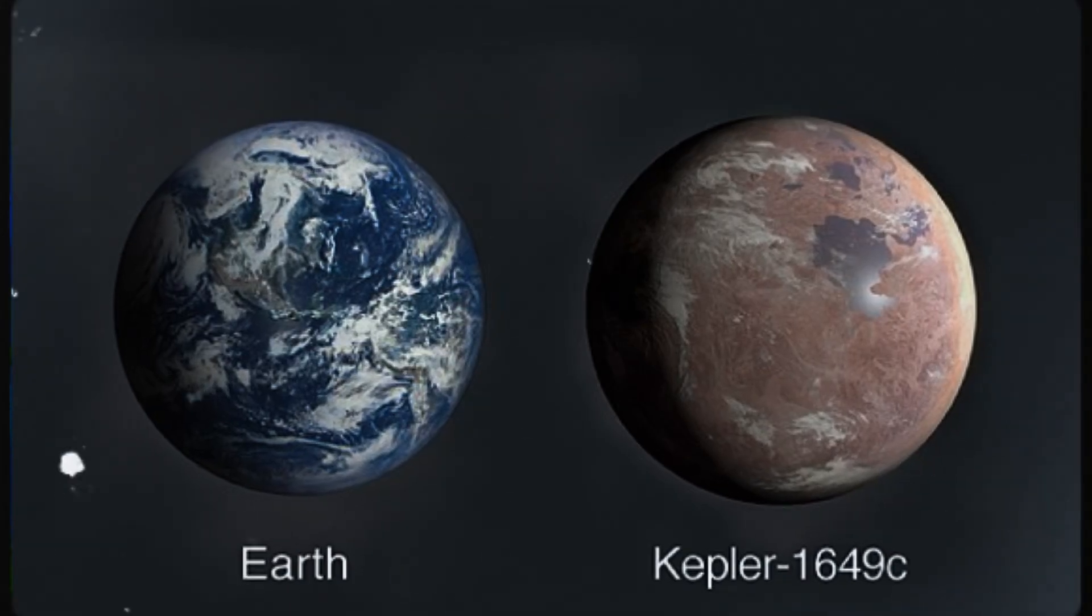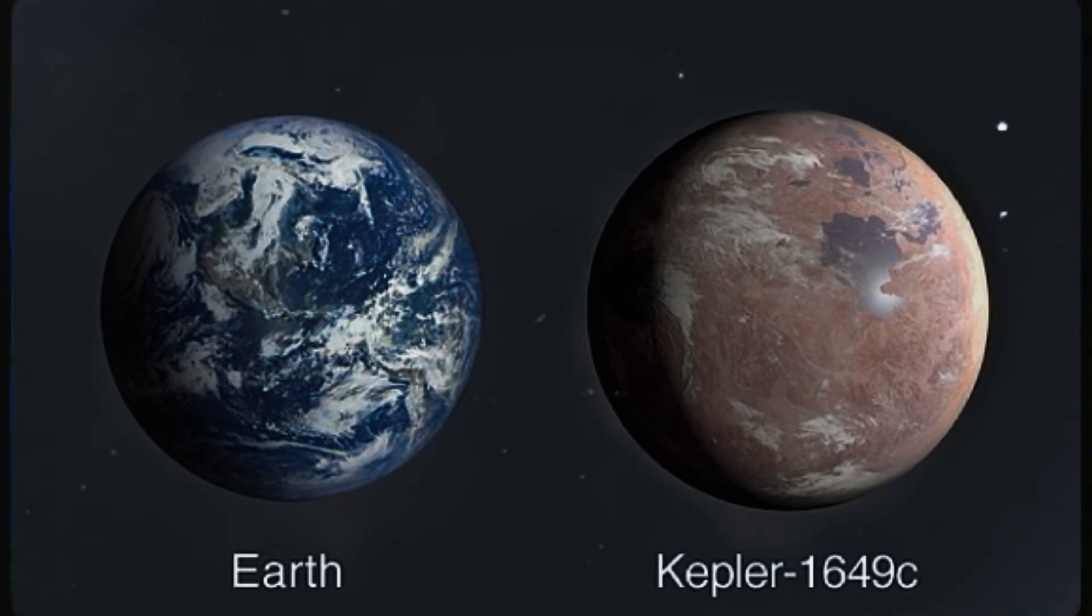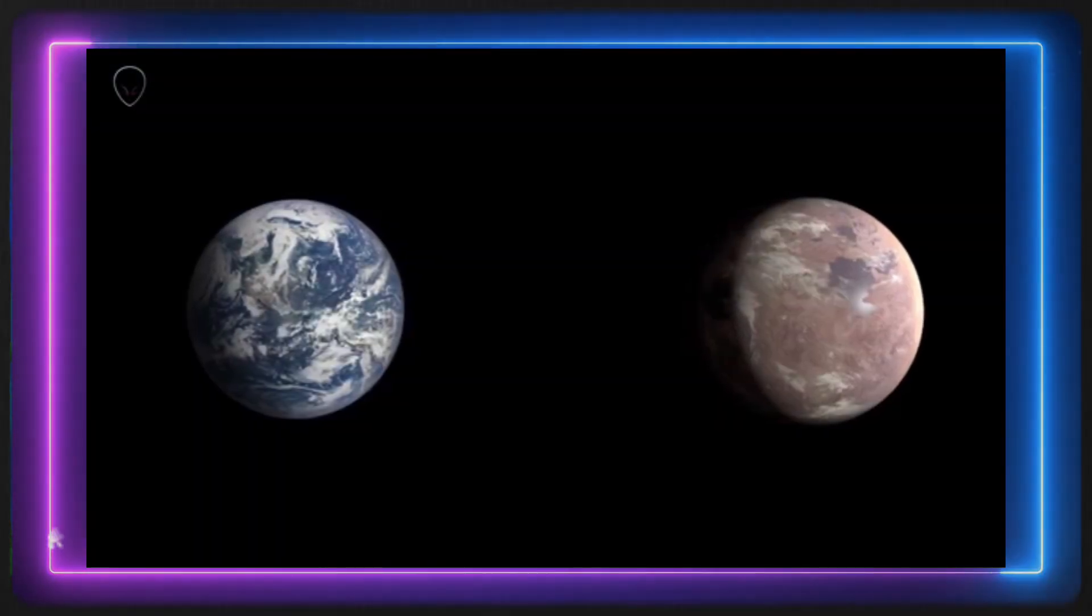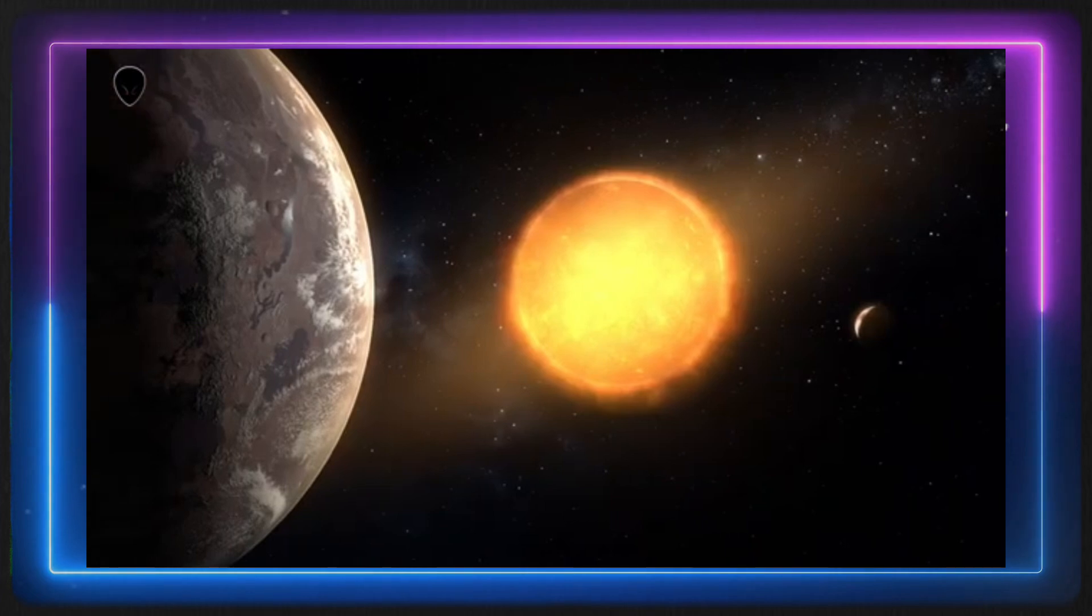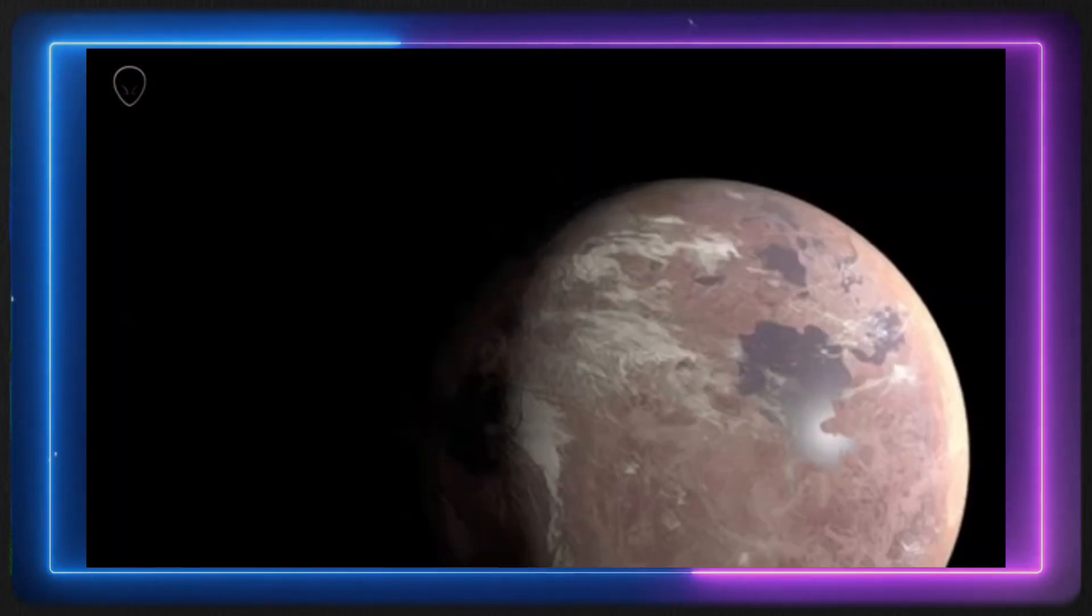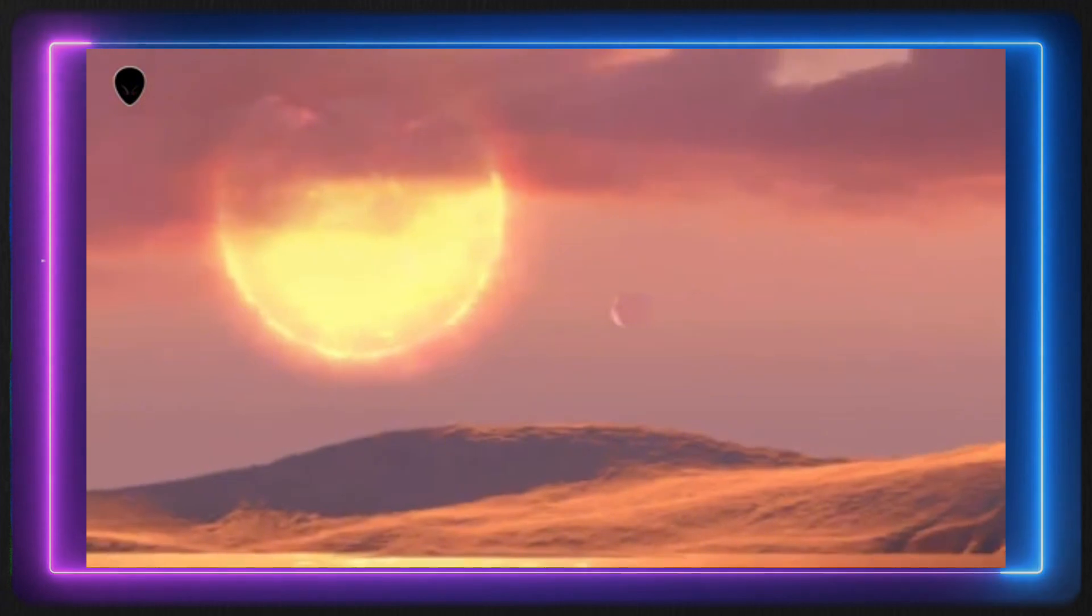Among them, some stand out, like Kepler 1649c. Its characteristics are strikingly similar to Earth, making it the most habitable planet we've identified that could potentially harbor life. So far, we've found 55 of these Earth-like planets, though we haven't yet studied them all in detail.